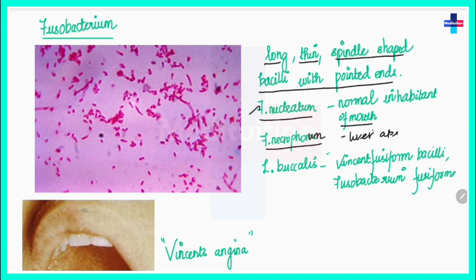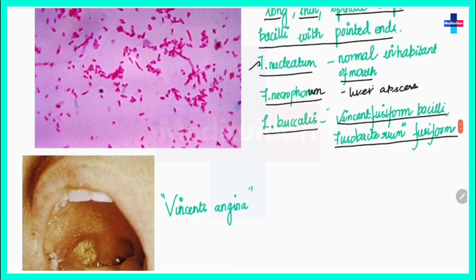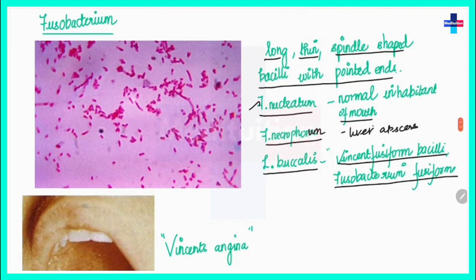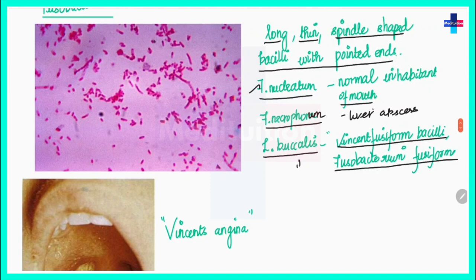Next is Leptotrichia buccalis, formerly known as Vincent's fusiform bacillus or Fusobacterium fusiforme. It is a long, straight, slightly curved rod with pointed ends — similar to Fusobacterium — and is part of the normal oral flora.